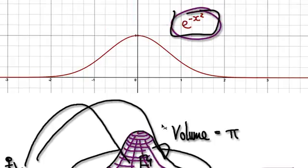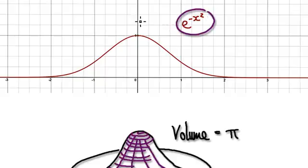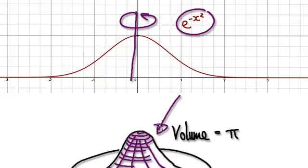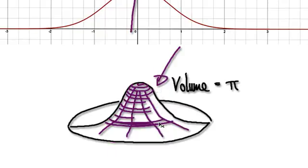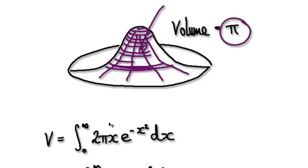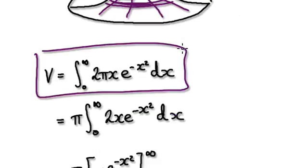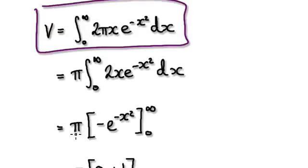Starting with this, if you rotate it 360° along the y-axis, you would get a 3D solid looking like this. The volume of this solid is given by pi — it's really us summing up all the shells. So the volume of this thing here is given by pi.